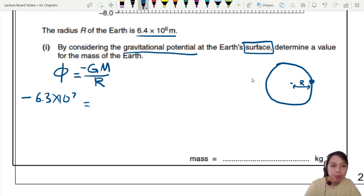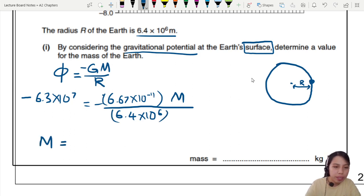Okay, let's plug in everything else that we know. So gravitational constant will be 6.67 times 10 to the negative 11. Mass, we don't know. We want to find. Radius of the Earth given to us, 6.4 times 10 to the 6 meters. All in all, if you press calculator correctly, you should get 6.045 times 10 to the 24.